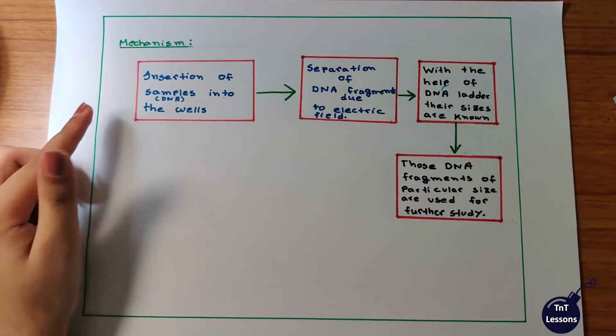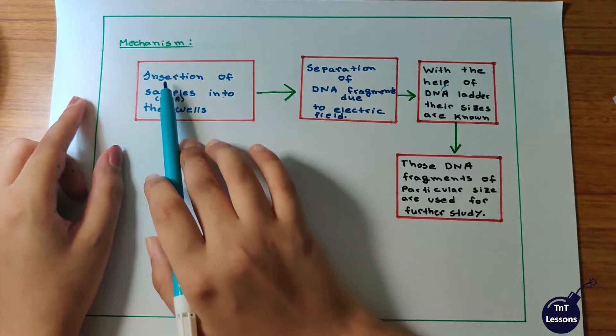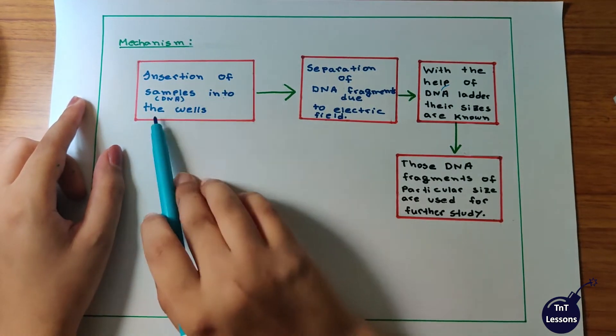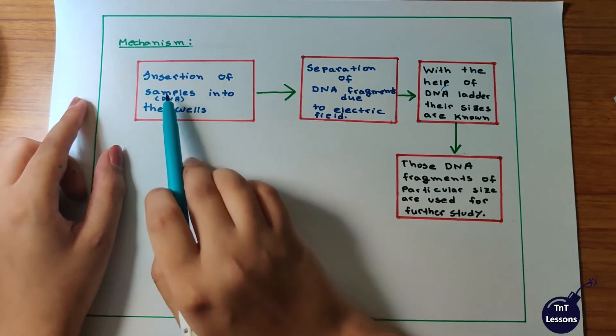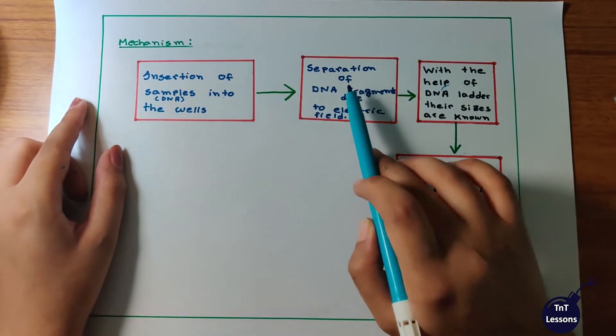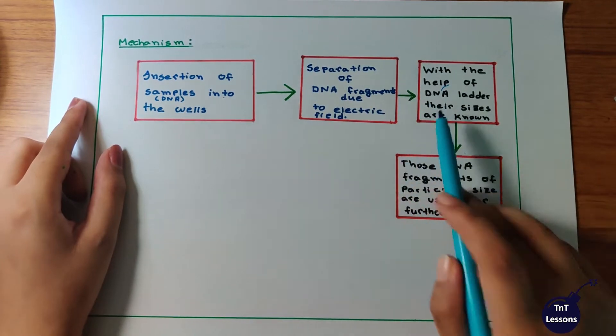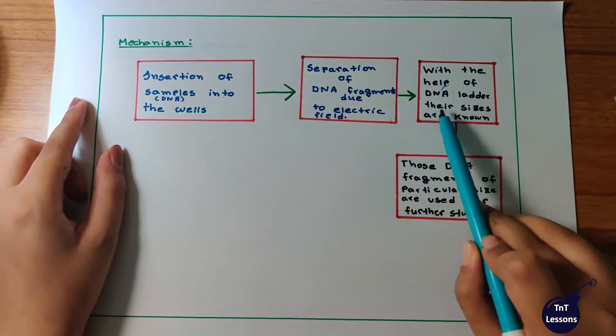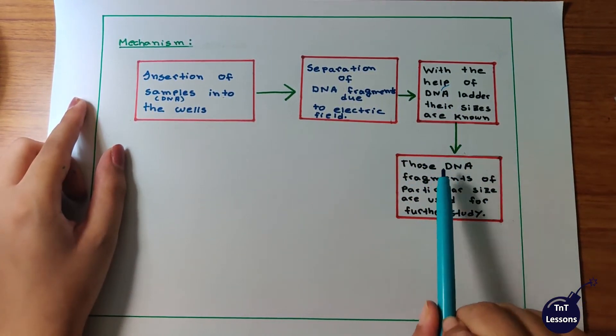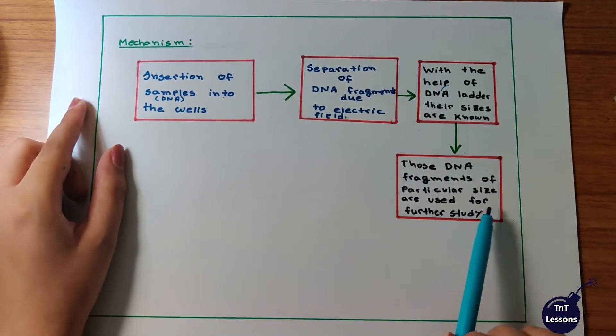First is the insertion of samples into the wells. For example, DNA samples. Then, the separation of DNA fragments occurs due to electric field. With the help of DNA ladder, their sizes are known. Those DNA fragments of particular size are used for further studies.